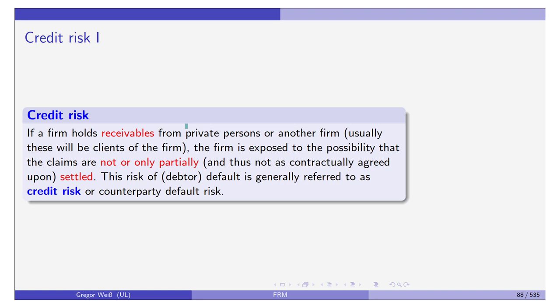If you are the manufacturer of a shoe company and you sell your shoes in wholesale to Lidl, Aldi, or Kaufland, what could happen is that the retail store defaults. You've already delivered the shoes, you have receivables — Forderungen aus Lieferung und Leistung — and the company who owes you money defaults. Then you have credit risk, which we also call counterparty default risk.